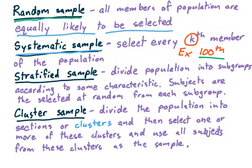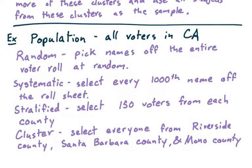And finally, to form a cluster sample, we'll take the population, split it up into sections or clusters, and then select one or more of these clusters and use all of the subjects from these clusters we've chosen as the sample. Here is a quick example to compare and contrast all four methods: random sampling, systematic sampling, stratified sampling, and cluster sampling.